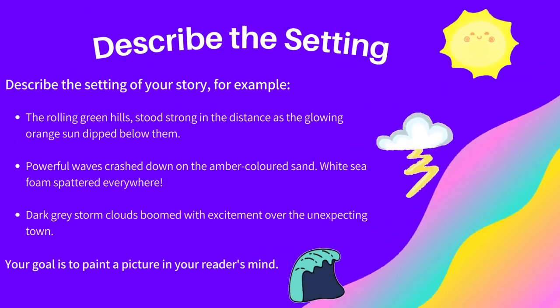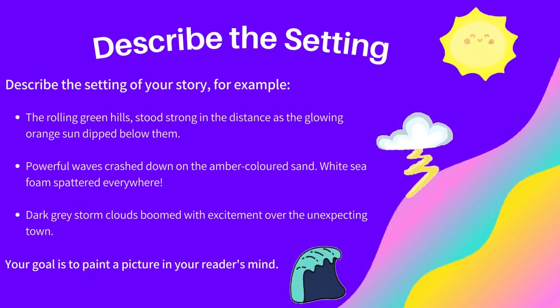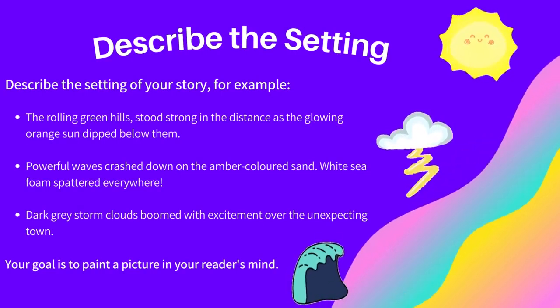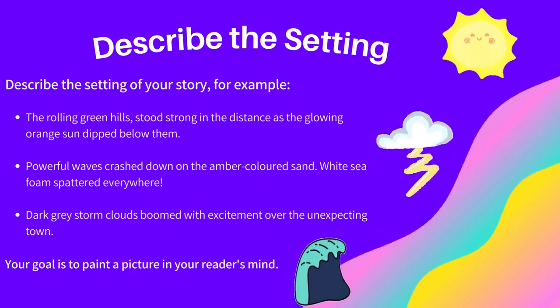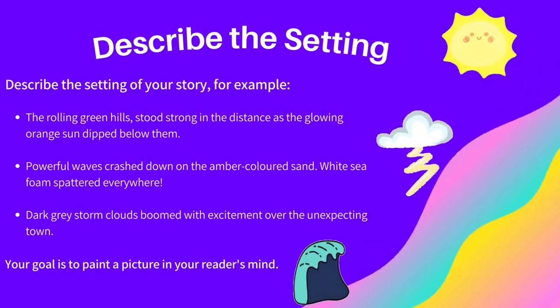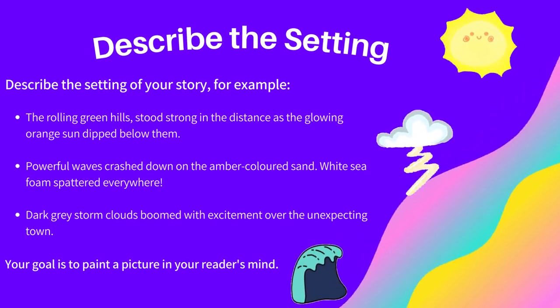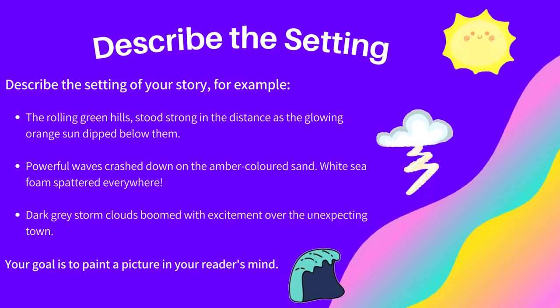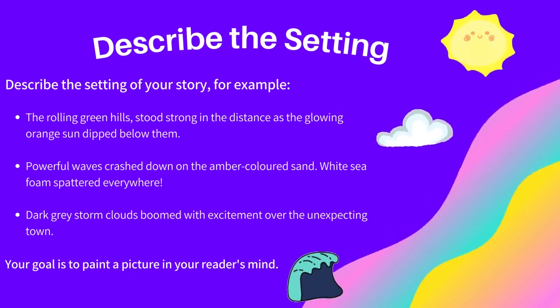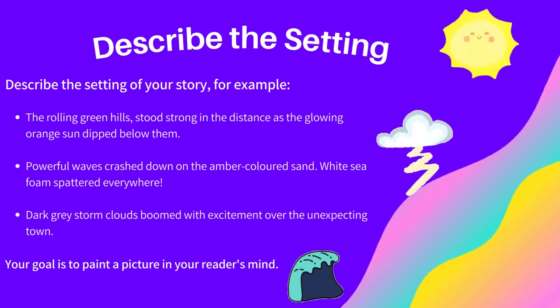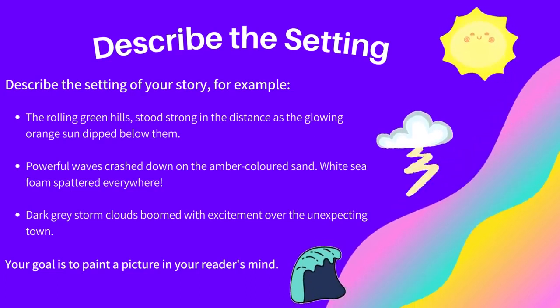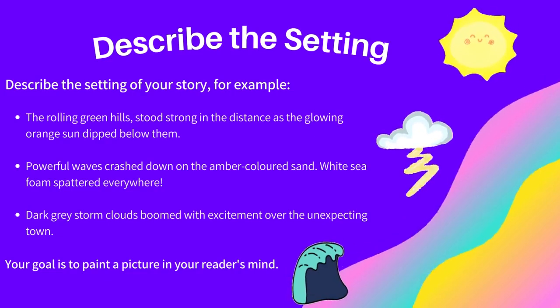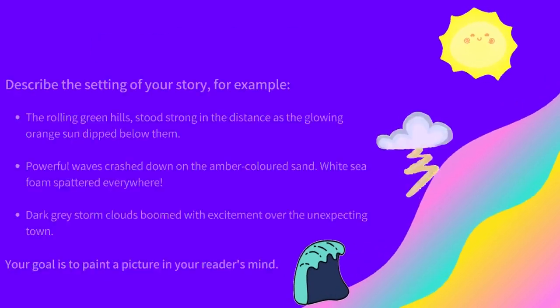Setting. Describe the setting of your story. For example, the rolling green hill stood strong in the distance as the glowing orange sun dipped below them. Your goal is to paint a picture in your reader's mind.